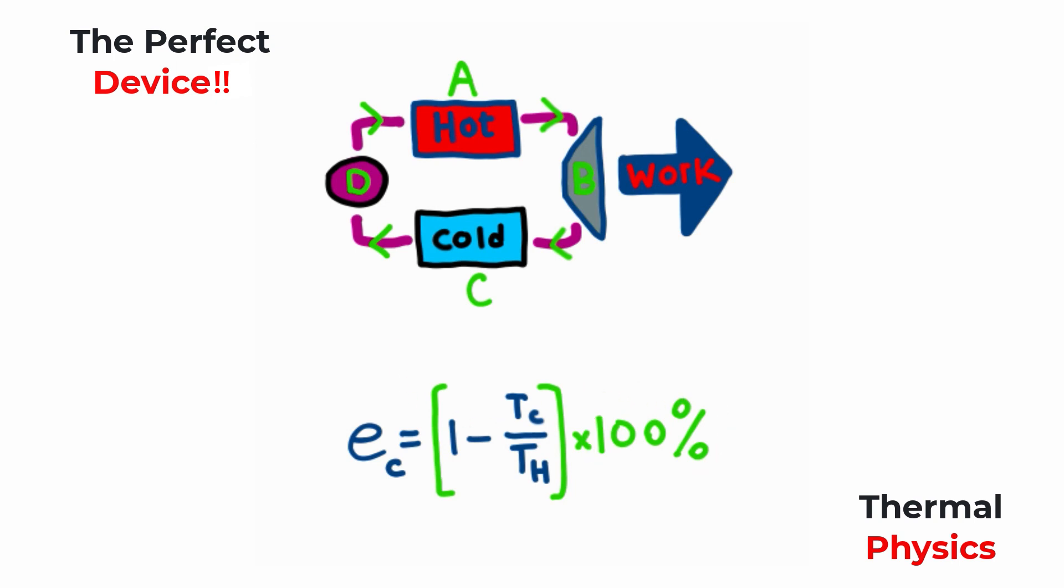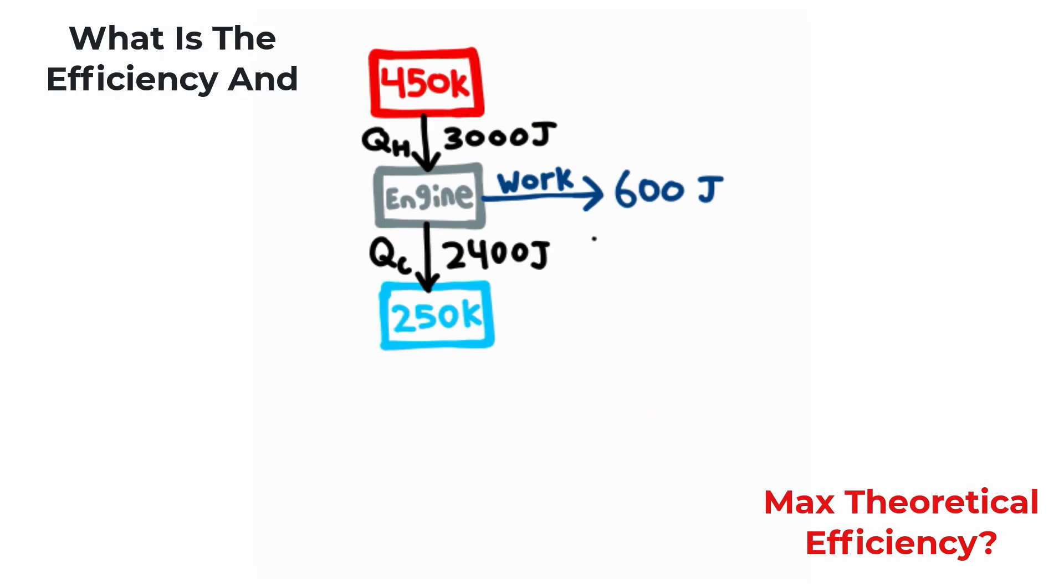Now, I want to make sure we can apply this equation. So let's try a practice problem. Here we have a heat engine, and I want to calculate both the efficiency and the maximum theoretical efficiency, which will be like treating this as a Carnot engine. The real efficiency is going to be the work the engine does, which is 600 joules, divided by the heat absorbed by the system, which is 3,000 joules. And then I'm going to multiply this by 100%. This will give me the efficiency of this engine.